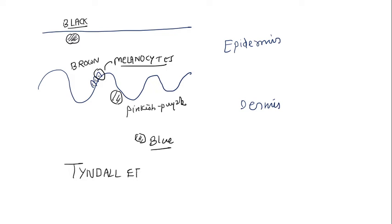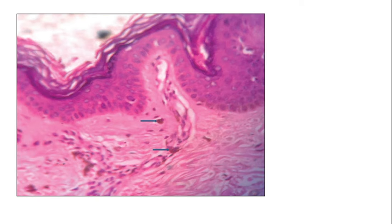Tyndall effect is nothing but because of the light angulation and the location of the cell and the granules within the cell which are made up of melanin, you get this different form of colors depending upon the depth of location of melanocytes. Now if you look at the histopath of lichen planus,